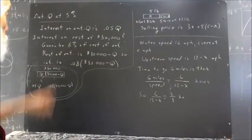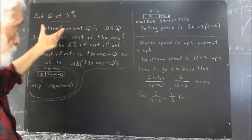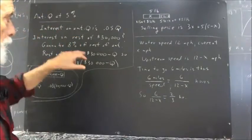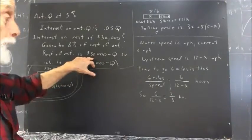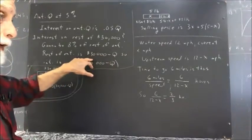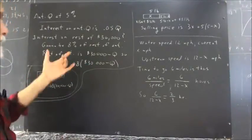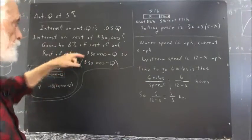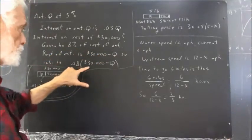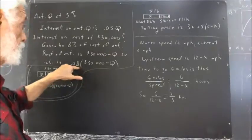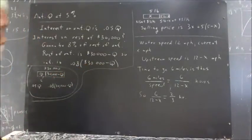What's the rest of the amount? Well, you invested Q of the $30,000, and now you're going to have how much left? You're going to subtract the amount you invested at 5% from the $30,000, and that's going to be invested at 8%. So you're investing $30,000 minus Q at 8%, which gives you this much interest: 8% of $30,000 minus Q.